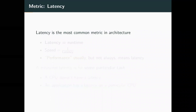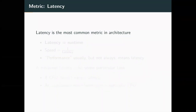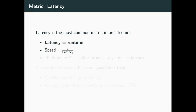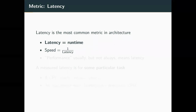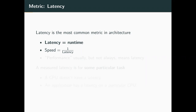Okay, let's talk about some actual metrics that we're going to be looking at in this class. The first is latency. It's the most common metric in all of computer architecture — pretty much if we're talking about anything, it's going to be in terms of latency. And it's just a fancy way of saying runtime. So if you're at a party and you're talking about how slow your computer is, don't say that — say the latency is very high. Speed we're going to define as just the inverse of latency.